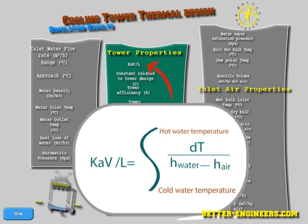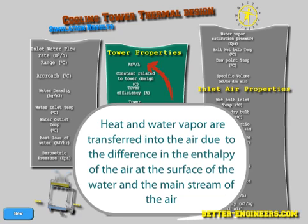The equation basically says that at any point in the tower, heat and vapor are transferred into the air, due approximately to the difference in the enthalpy of the air at the surface of the water and the main stream of the air.